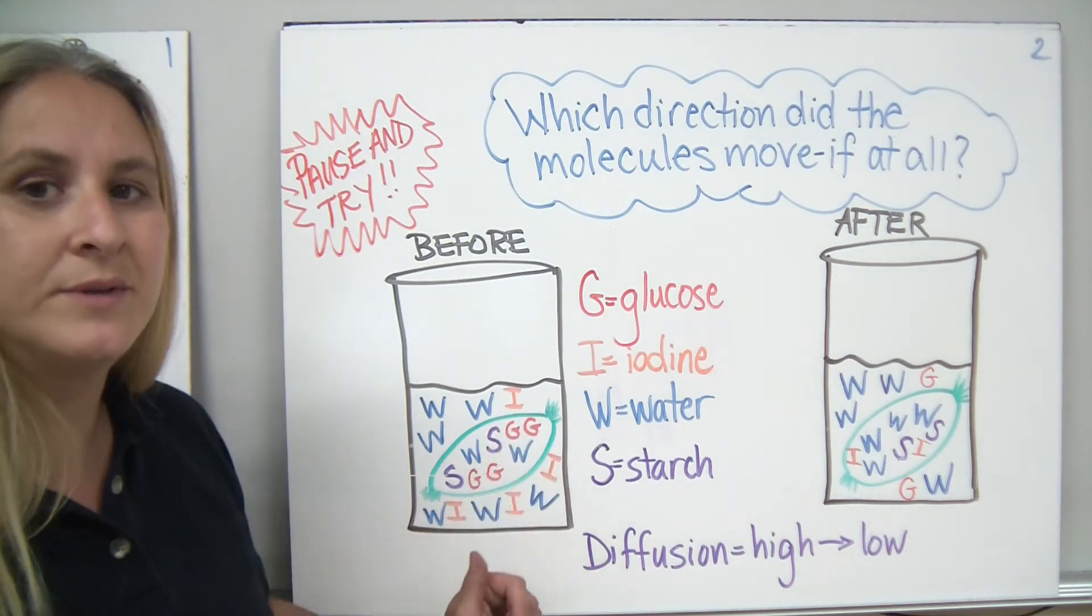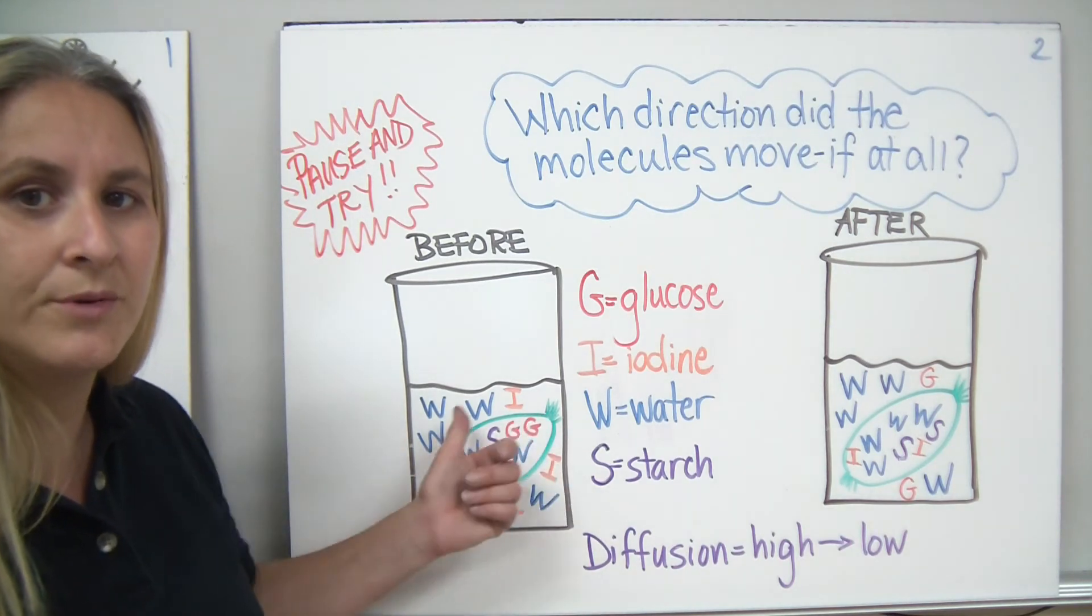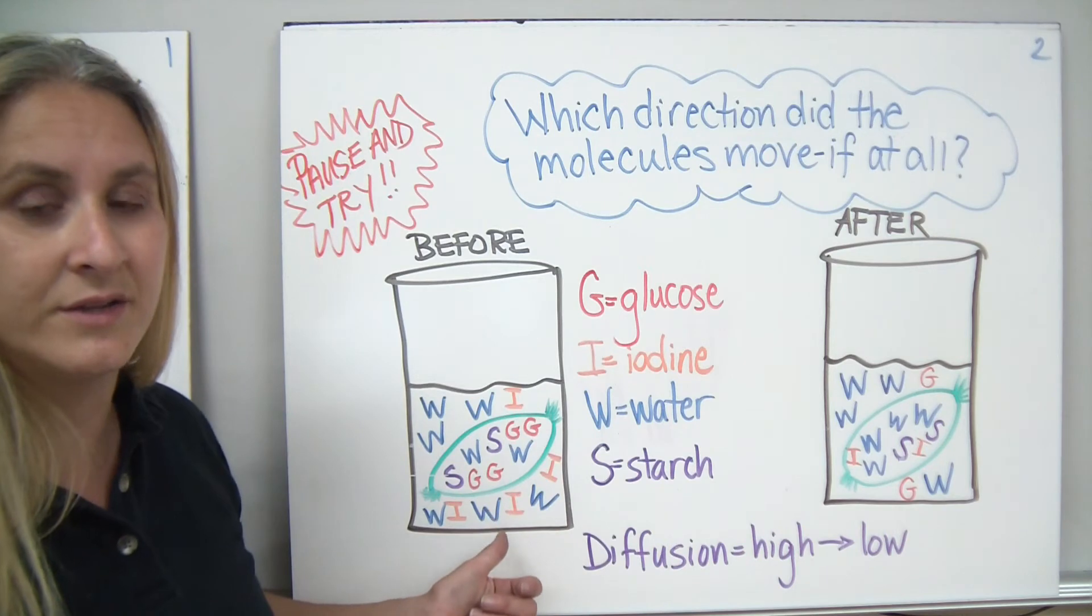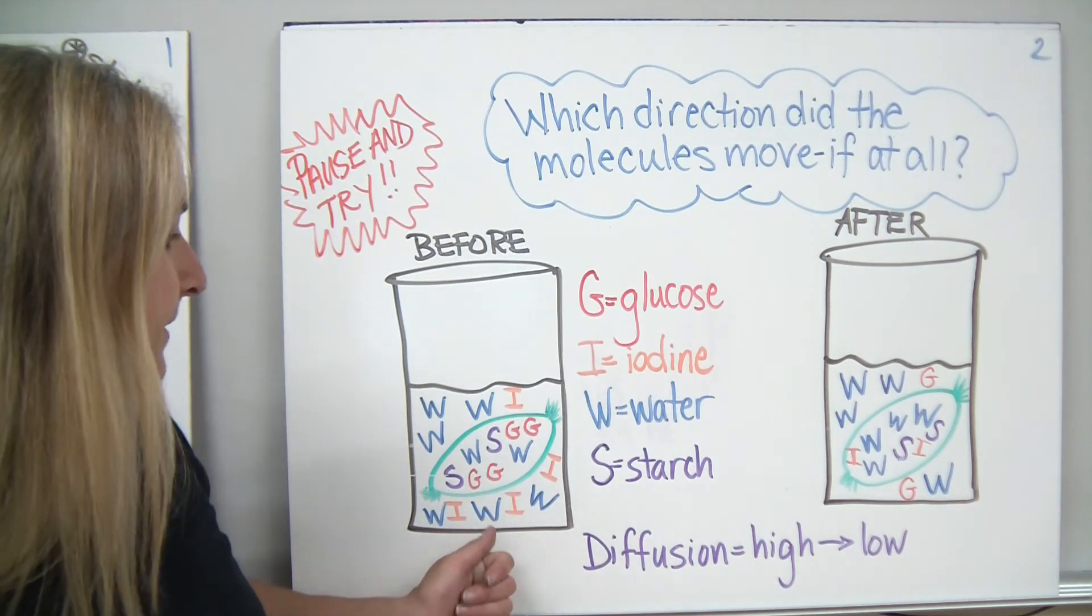There were also glucose molecules inside the cell, but there was no glucose outside of the cell in the liquid surrounding the cell at the beginning of the experiment.